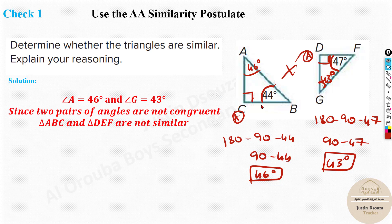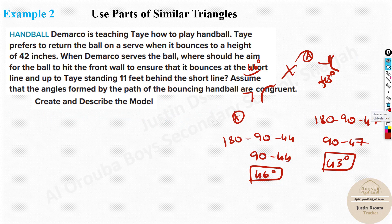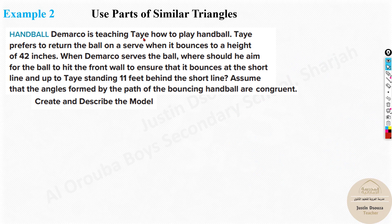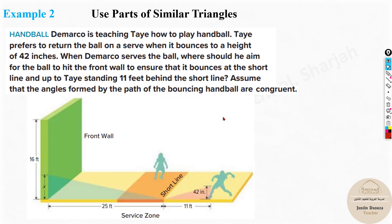Now the last problem - a real-world scenario. DeMarco is teaching Thai how to play handball. Thai prefers to return the ball on a serve when it bounces to a height of 42 inches. When DeMarco serves, where should he aim for the ball to hit in front of the wall so it bounces at the short line up to Thai, who is standing 11 feet behind the short line? The angles formed by the path of the bouncing handball are congruent.